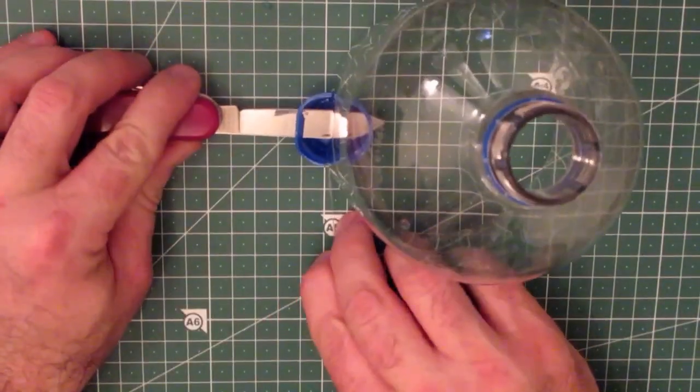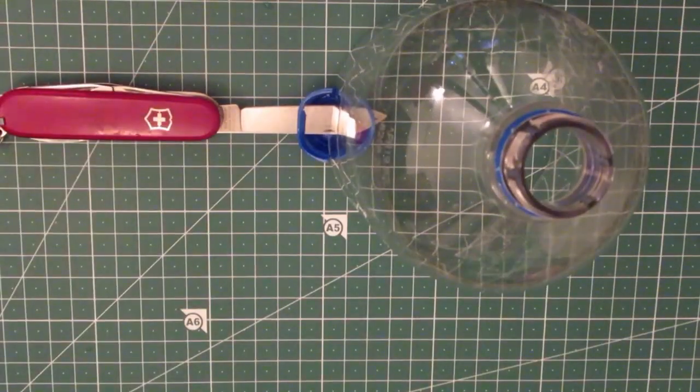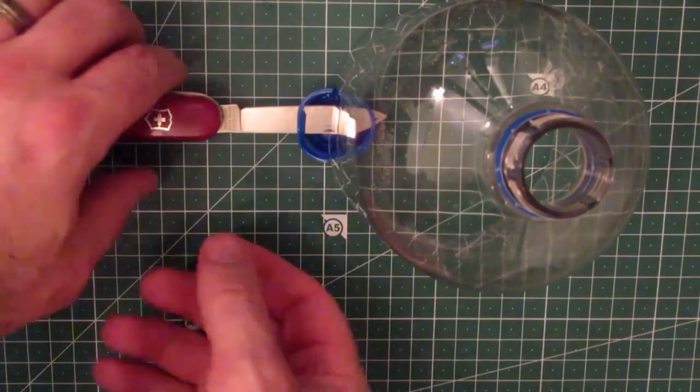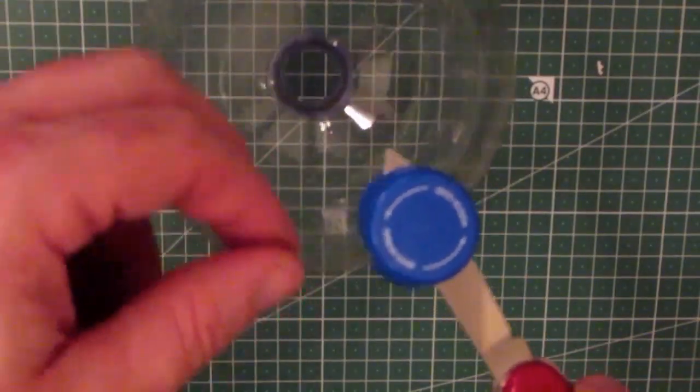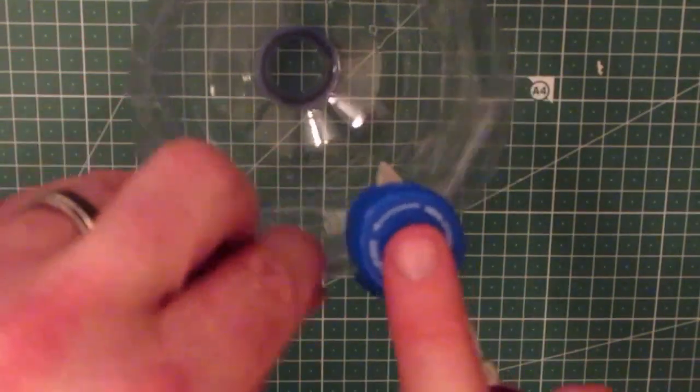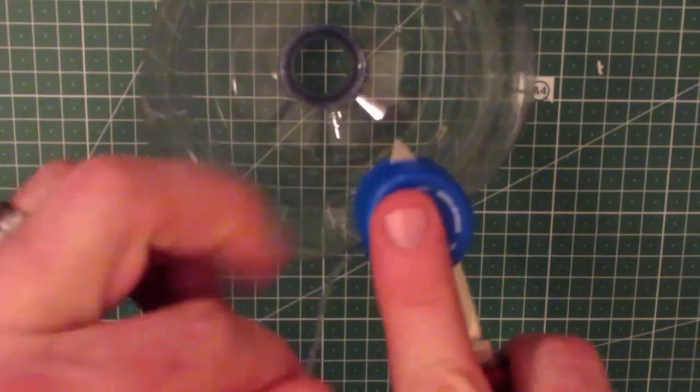Now you could just pull the loose bit now, but I find it's a little bit easier if I have it the other way around, so I can keep downward pressure on the cap as I'm pulling it. And then you just pull the loose bit and away you go.